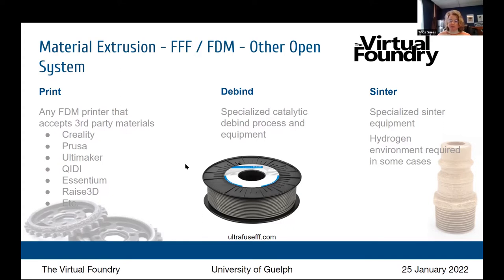With Ultrafuse material, because of how the debind and sintering process happen, the design guidelines include 100% infill and consistent wall thickness. If you need support material it's going to be more of the same material you're printing with, and you can break off those supports before or after sintering. During the debind and sinter process there is nothing else holding up the part inside the kiln, so if there's an overhang or outcropping there's potential for it to droop unless it has some support. BASF provides all these design guidelines to help you get success with your parts.